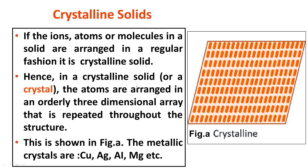In a crystalline solid, the atoms are arranged in an orderly three-dimensional array that is repeated throughout the structure. Whether the smallest element is an atom, molecule or ion, those elements are orderly arranged in a three-dimensional array, and this order is repeated throughout the structure. Examples of crystalline solids include copper, silver, aluminium and magnesium.